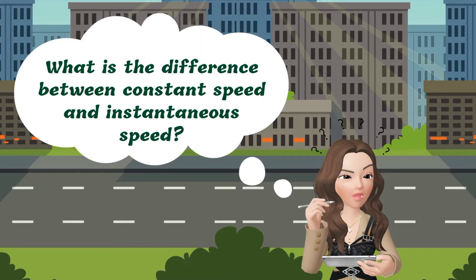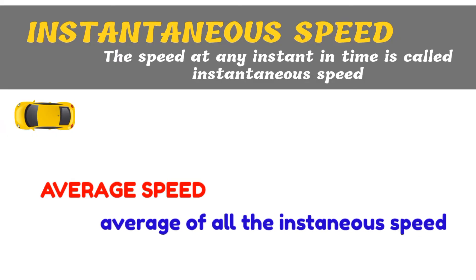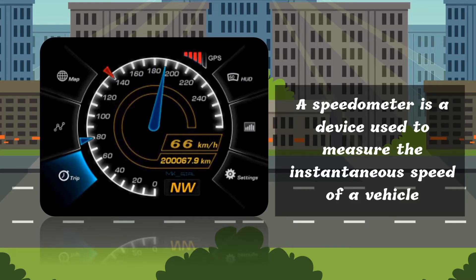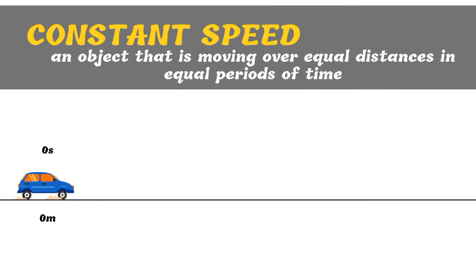What is the difference between constant speed and instantaneous speed? As an object moves, it often undergoes changes in speed. For example, while riding a car, you may notice that the speed of the car changes from time to time. The speed at any instant in time is called instantaneous speed. On the other hand, average speed is the average of all the instantaneous speeds. A speedometer is a device used to measure the instantaneous speed of a vehicle. The unit of speed is meter per second, but there are other units of speed such as kilometer per hour or miles per hour. If a car or any object was moving over equal distances in equal periods of time, it would have a constant speed. It is usually very difficult to maintain a constant speed, particularly in driving.